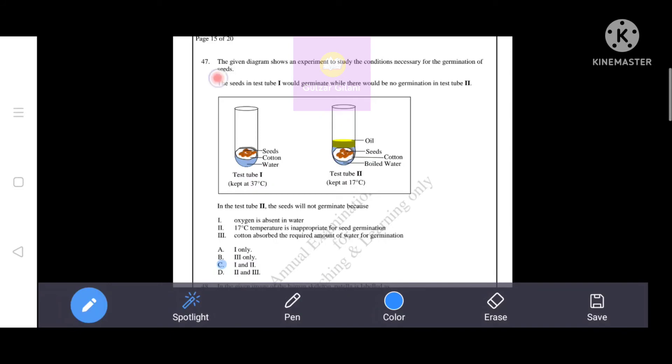Next question. The given diagram shows an experiment to study the conditions necessary for the germination of seeds. The seeds in test tube 1 would germinate, while there would be no germination in test tube 2. Test tube 1 seeds will germinate, whereas test tube 2 seeds will not germinate.